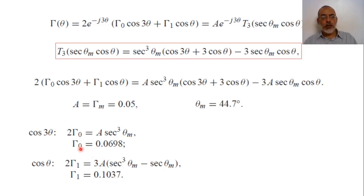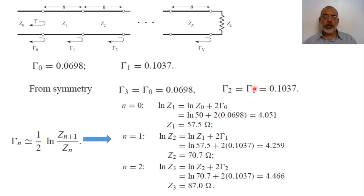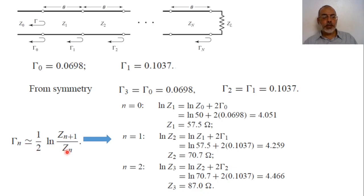We have obtained γ_0 and γ_1. From the symmetry of the problem, γ_3 = γ_0 and γ_2 = γ_1. So we now have all four reflection coefficients: γ_0, γ_1, γ_2, and γ_3. In general, γ_n = (1/2)·ln(Z_{n+1}/Z_n).